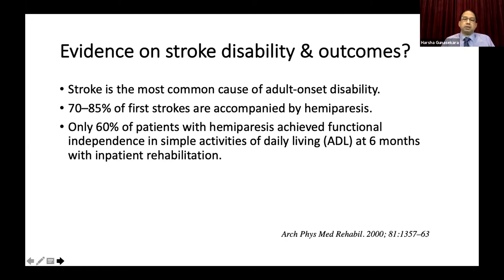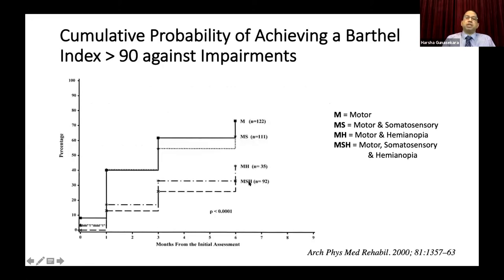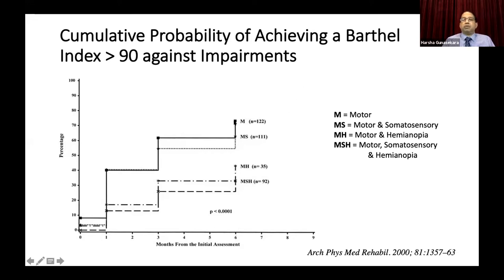A study involving close to 500 patients examined those with different impairments and checked recovery at six months, defined as achieving a Barthel Index of 90 or more. Patients with only motor weakness had a much better rate of recovery compared to those with additional impairments such as somatosensory impairment, hemianopia, or mixed impairments. The higher the number of impairments, the lower the chances of independence at six months.